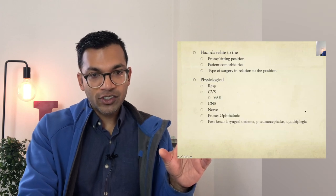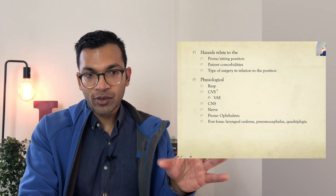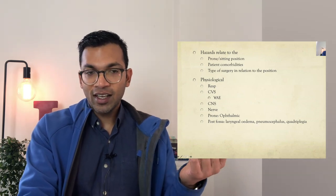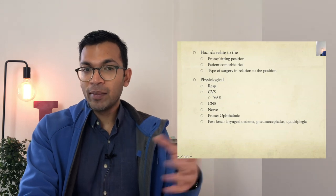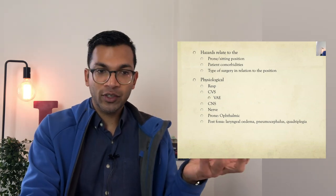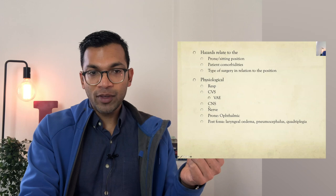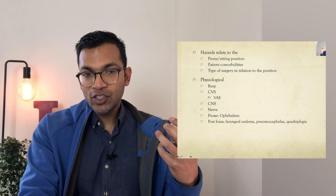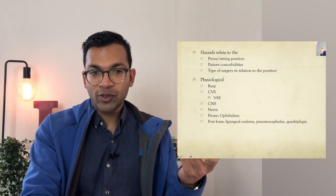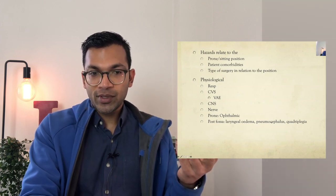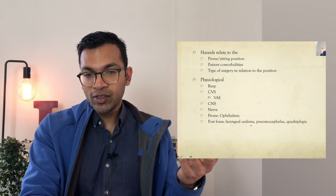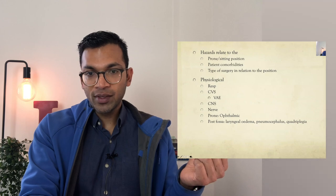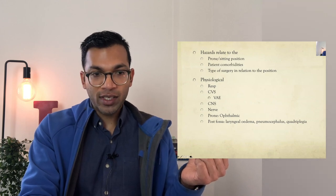So physiological stuff that I might talk about which are impaired or improved. Respiratory function may be improved in some positions like sitting, but cardiovascularly it might be worse because of blood pressure issues, increased risk of venous air embolism. Maybe you've got issues with high pressures in the intracranial cavity, nerve injuries, prone positions can increase ophthalmic injury and then posterior fossa has a whole bunch of issues not just venous embolism but laryngeal edema, pneumocephalus and quadriplegia because it's working around the brainstem.